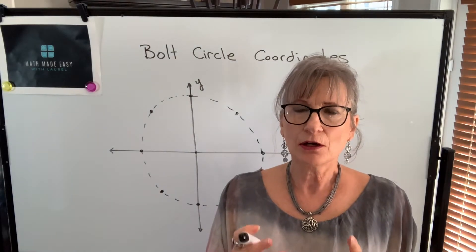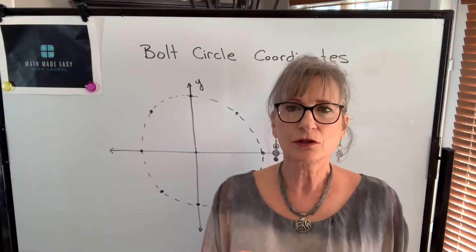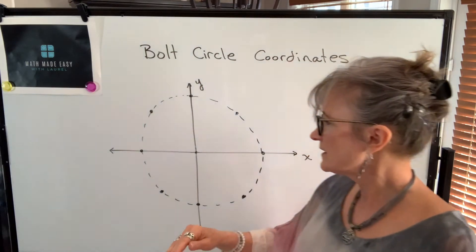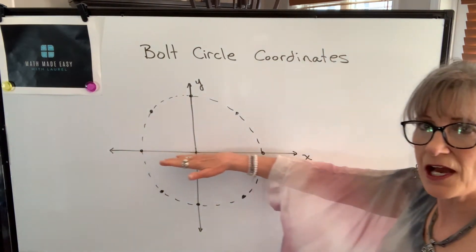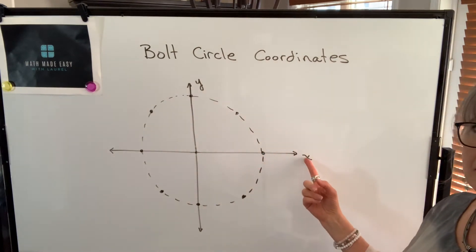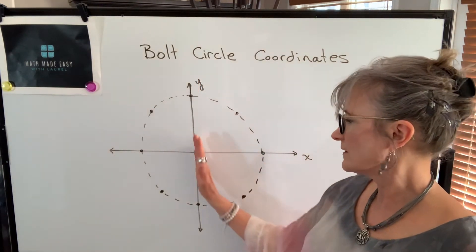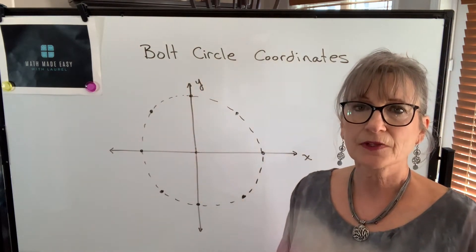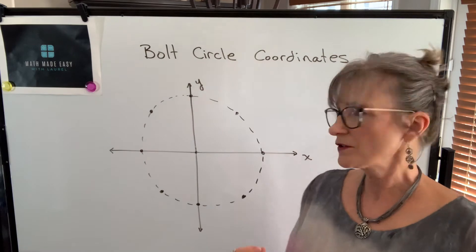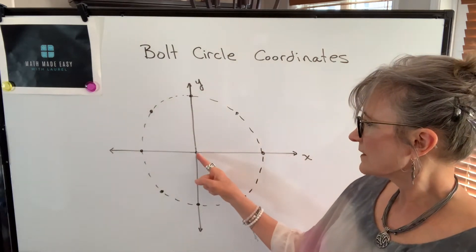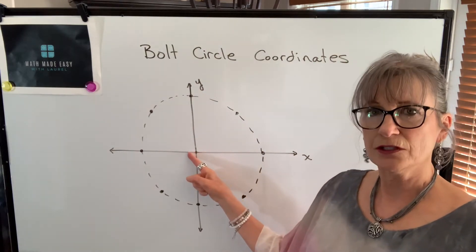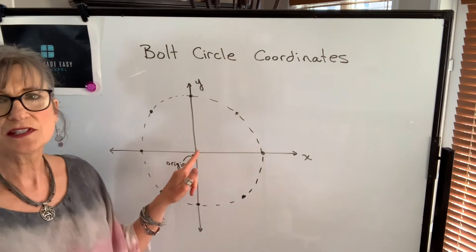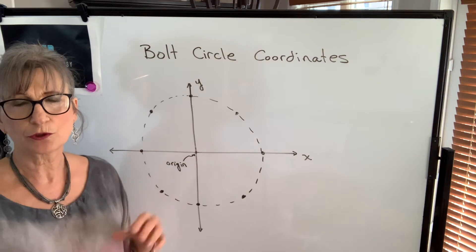We are going to take our bolt circle and place it on what's called a Cartesian coordinate system, also called a rectangular coordinate system, which consists of two axes: a horizontal axis which is the x-axis and a vertical axis which is called the y-axis, or you might refer to it as a cross-feed axis. We're going to center that circle so that its center is at the origin, which is the point of intersection of the two axes.